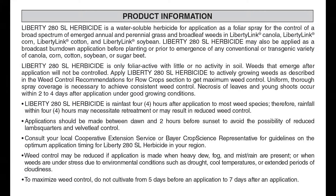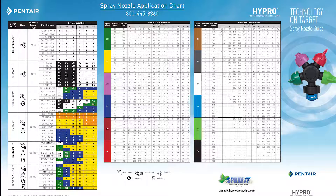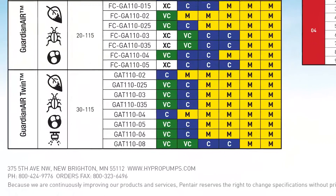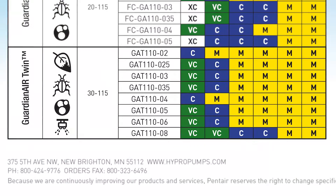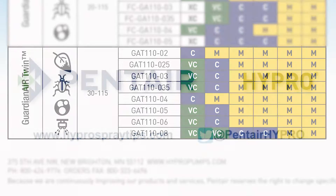Once you gather the information from the label, reference the nozzle guide to select the correct nozzle using the information the label provided. In this case we know it's a contact herbicide, but we also know that it utilizes medium droplets. By using the guide, you can see that the Guardian Air Twin has the largest band of medium droplets of any of our nozzles. Therefore, we recommend selecting the Guardian Air Twin for use with Liberty.